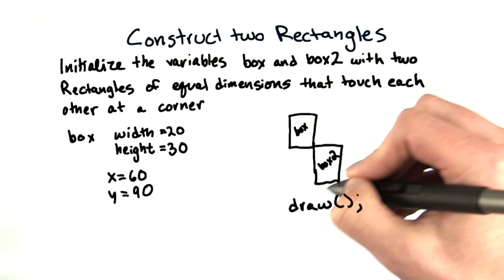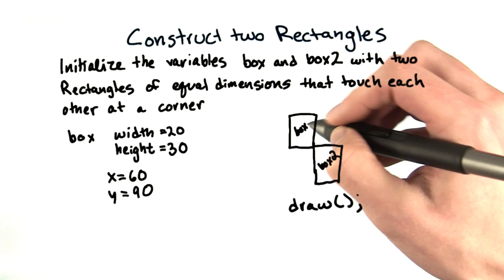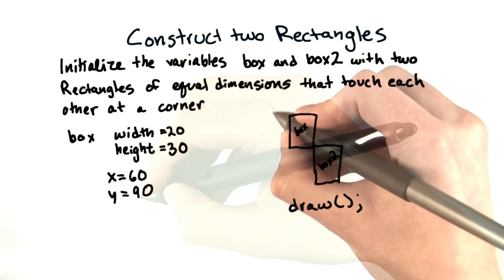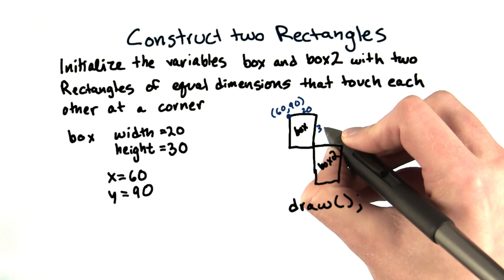Before I write any code, I'm going to figure out all of the dimensions and specifications of my rectangles. Box will match the specifications given. So it'll be at 60, 90, and have a width of 20, and a height of 30.